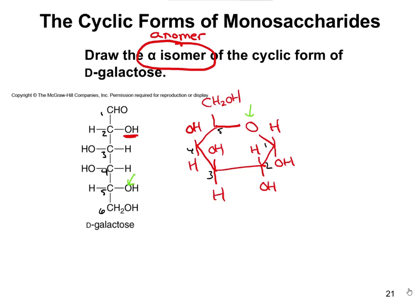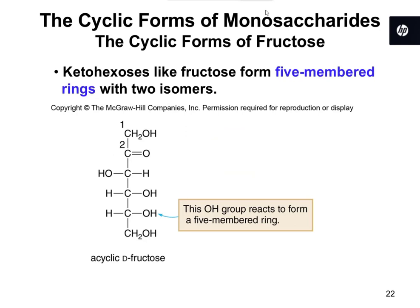Make sure you know how to draw the cyclic forms from the linear structure. Draw the six-membered ring with the O in the upper right-hand corner, the extra CH2OH on top connected to carbon 5, OHs on the right go down, OHs on the left go up, and on carbon 1 you look to see whether it's an alpha or beta anomer and draw it from there.